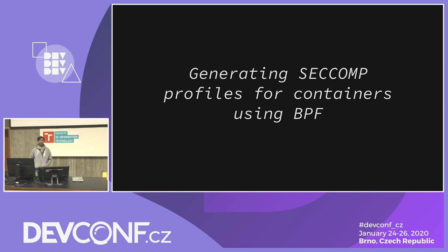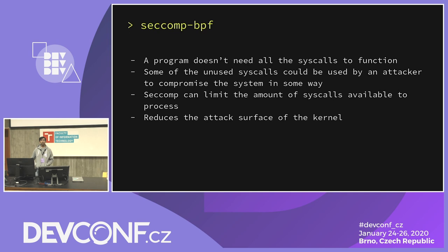Does everybody know what seccomp is? For those who don't know, seccomp is a Linux security tool which is used to limit the attack surface of the kernel. You can use it to specify which syscalls a process can access. Initially it just allowed four syscalls, but later it was expanded using BPF — Berkeley Packet Filter — so you could set exactly what syscalls you could allow for a process. It's really helpful in limiting down the number of vectors available for exploits.